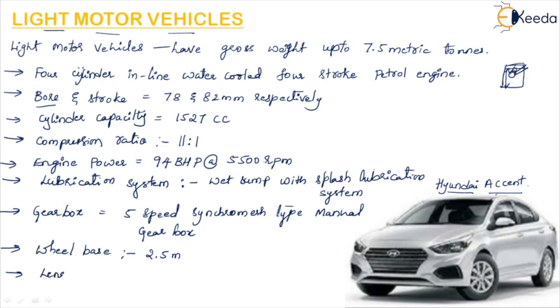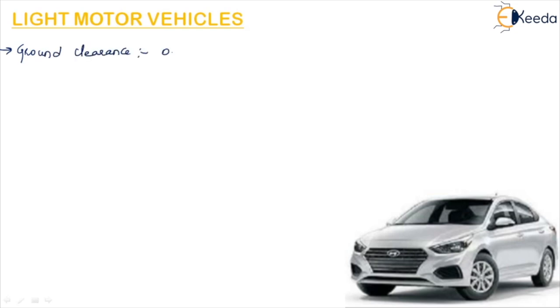The total length of the car is approximately 4.2 meters. The width — measured across the car — is approximately 1.6 meters. The ground clearance is 0.175 meters, which is the distance between the lowest frame of the car and the ground.